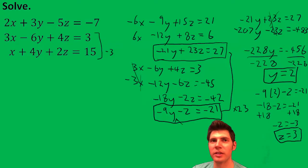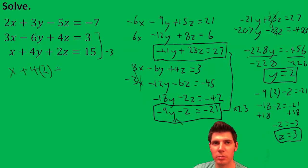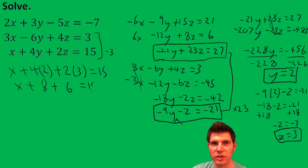Now I can plug these two into any equation. I'll just plug it into this bottom one right here. So we have x plus 4 times 2 plus 2 times 3 equals 15. This is x plus 8 plus 6 equals 15. x plus 14 equals 15. Minus 14 from both sides. It's x equals 1.